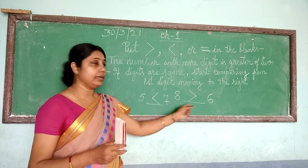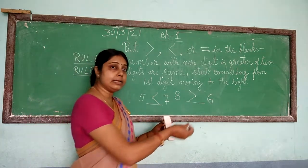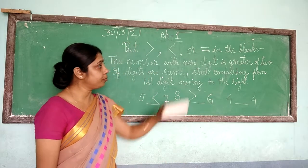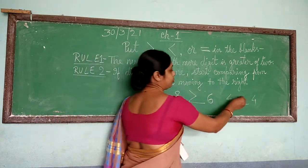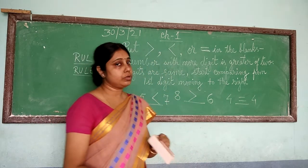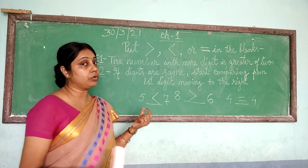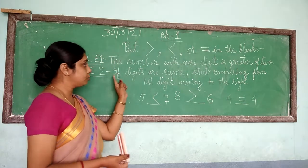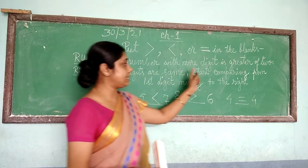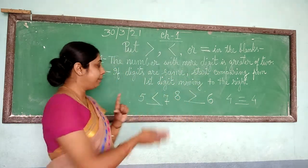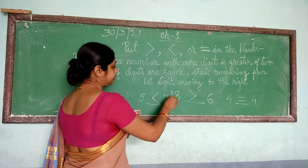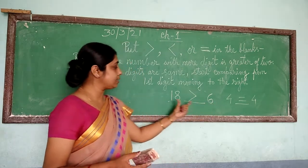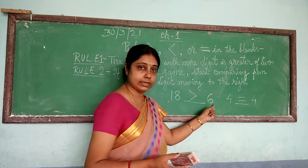Now if both numbers are the same — suppose 4 blank 4 — both numbers are same, so we put equal to. Now these are all about one-digit numbers, which is easy to identify. Now we can go to two-digit numbers. Rule 1: the number with more digits is greater. For example, 18 has 2 digits and this side has 1 digit, so the 2-digit number will always be greater than the 1-digit number.